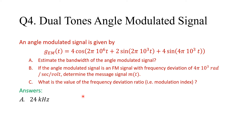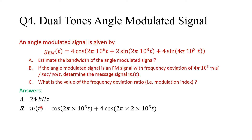Here are the answers. For part A, the bandwidth is 24 kHz — you can share your working in the comments. For part B, the message signal should be the given expression: a cosine plus four times a cosine with two different frequencies. If you get this expression right you are good to go; if you have a scaling factor, something is wrong. For part C, the modulation index beta should be 5. You need to find delta-f and the bandwidth to get beta.